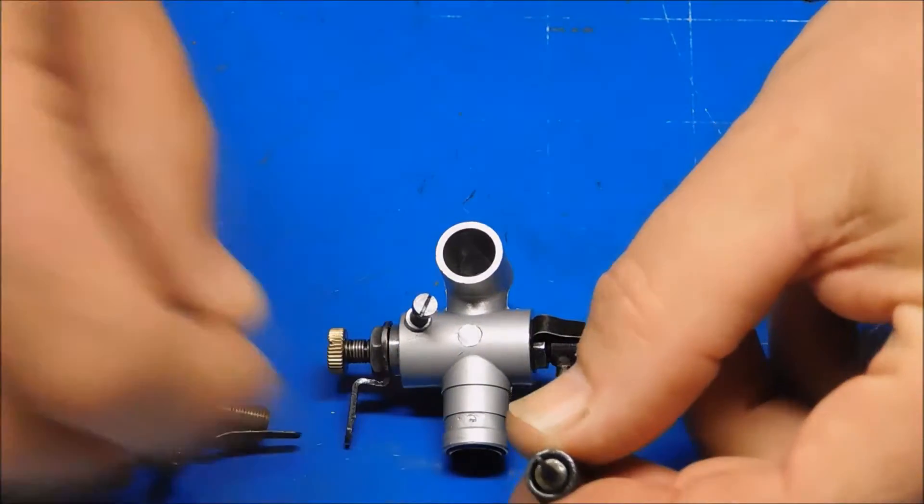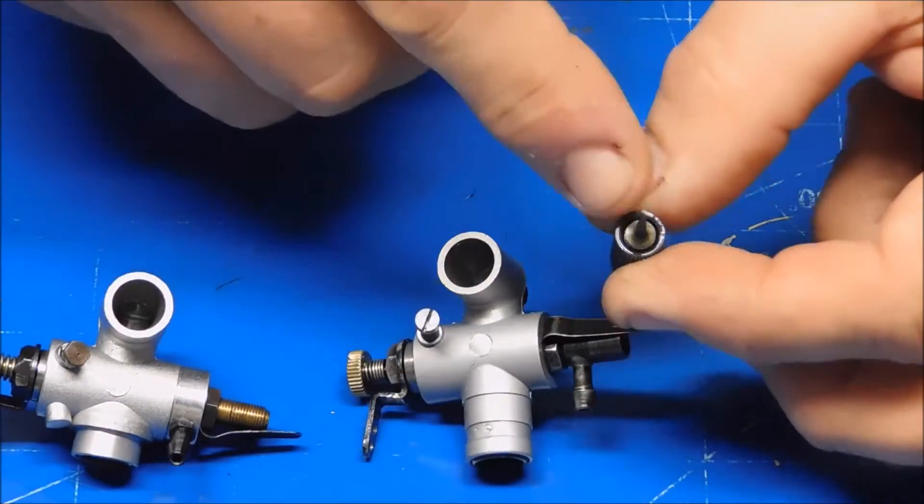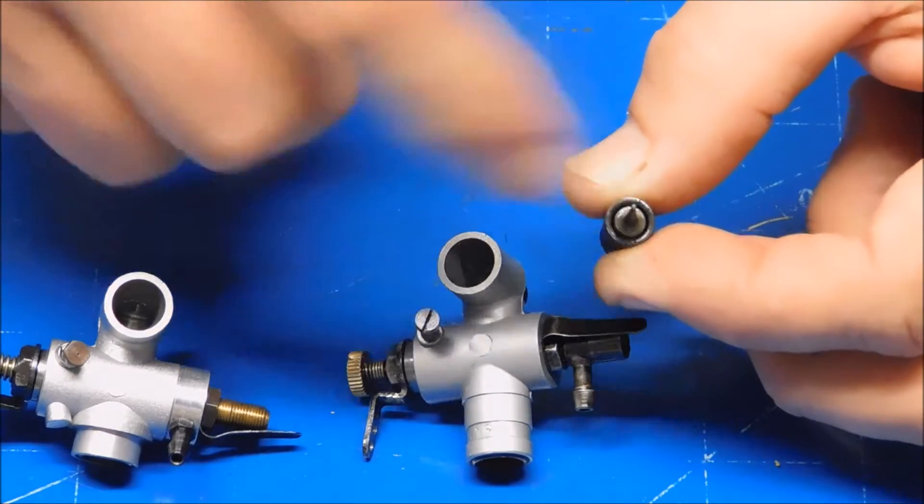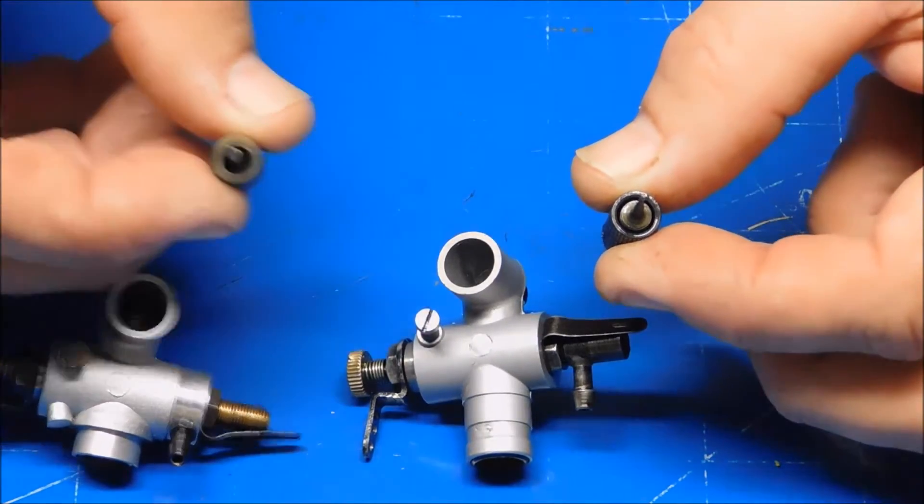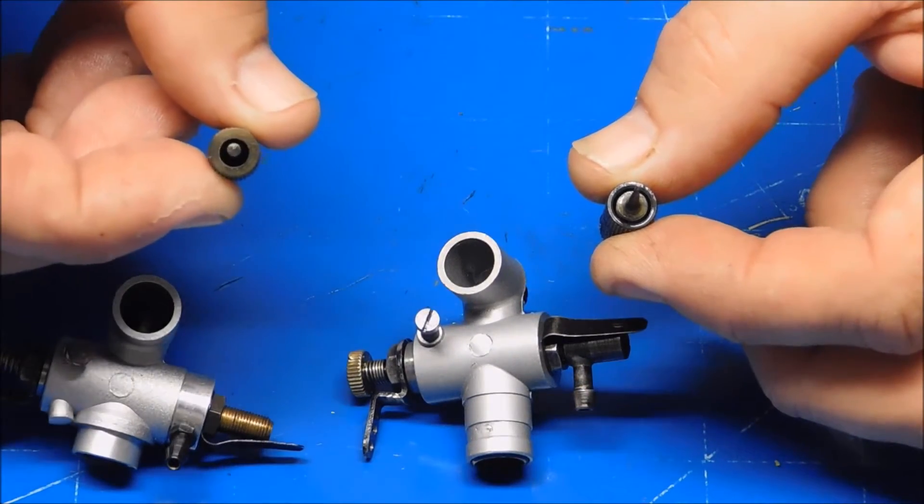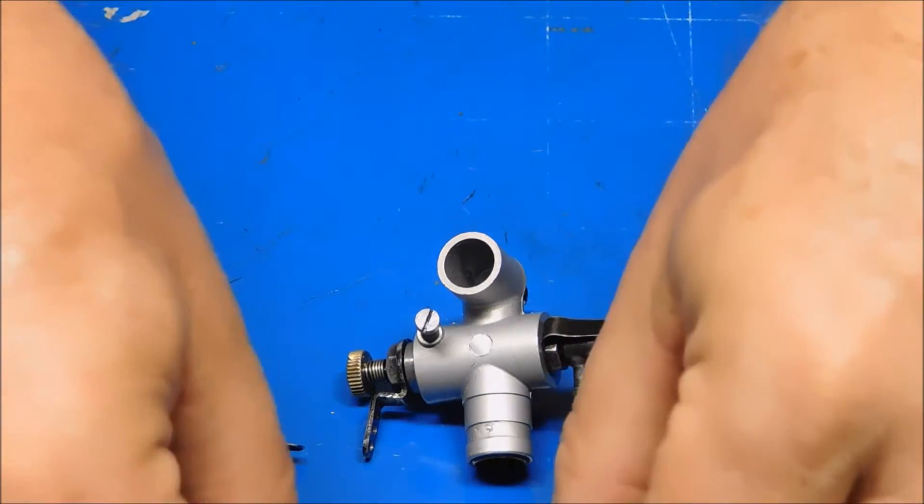And if you look closely inside this needle that came out of the 40, it's got a body inside there that's threaded. This one is hollow because of how they're threaded in there.